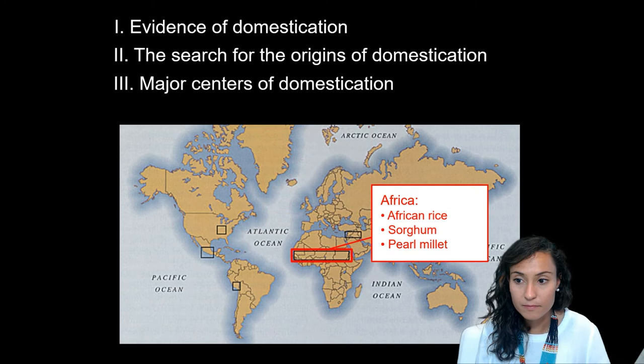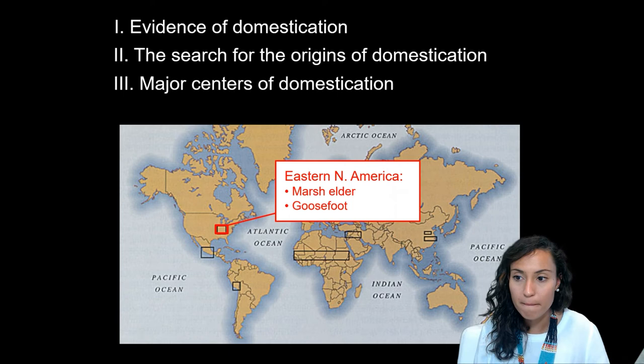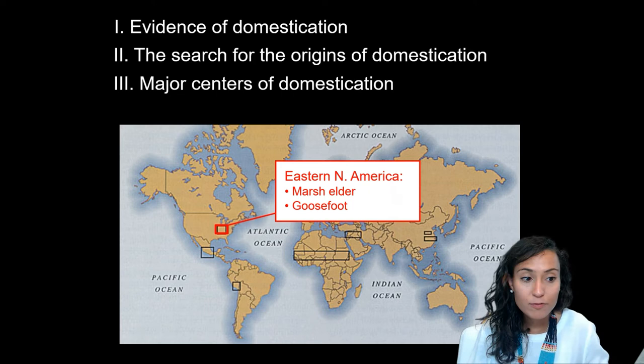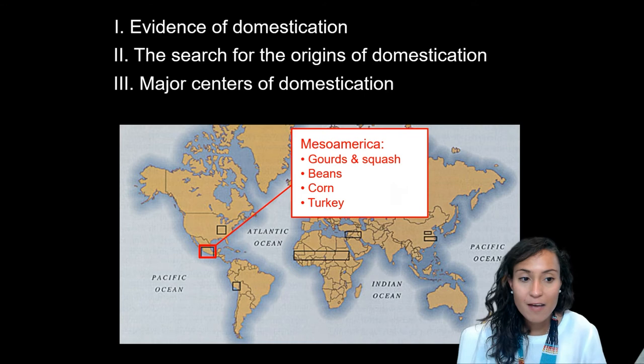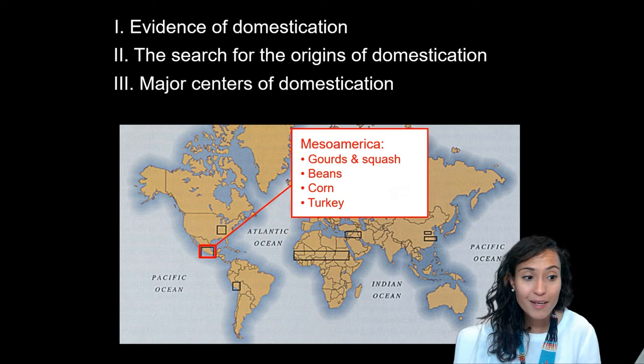We also have evidence for early domestication in Africa, with a different set of crops — rice, sorghum, and millet. Moving into the Americas, there is early evidence for agriculture in the eastern United States, particularly goosefoot and marsh elder. In the North American Southwest and Mesoamerica, crops like gourds, squash, beans, and corn appear, as well as the domestication of birds like turkeys.